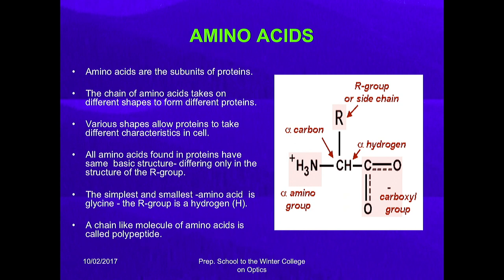There are only 20 amino acids, but just the arrangement is different and their function is different. Amino acids are the subunits of protein, and the chain of amino acids takes on different shapes to form different proteins. Various shapes allow proteins to take on different characteristics in the cell. All amino acids found in proteins have the same basic structure, differing only in the structure of the R group. The simplest and smallest amino acid is glycine, where the R group is hydrogen. A chain-like molecule of amino acids is called a polypeptide.